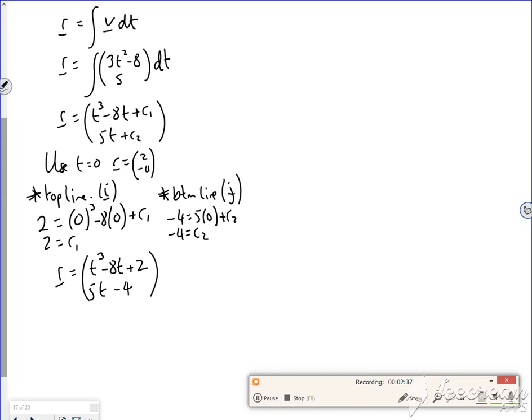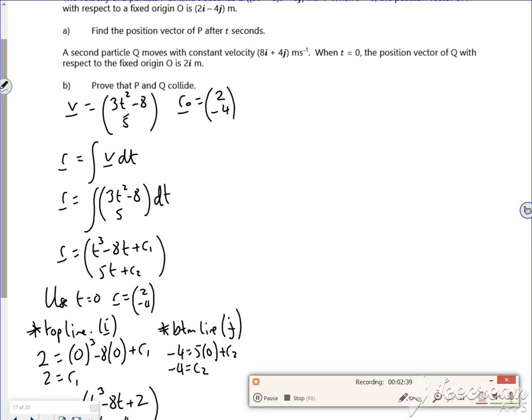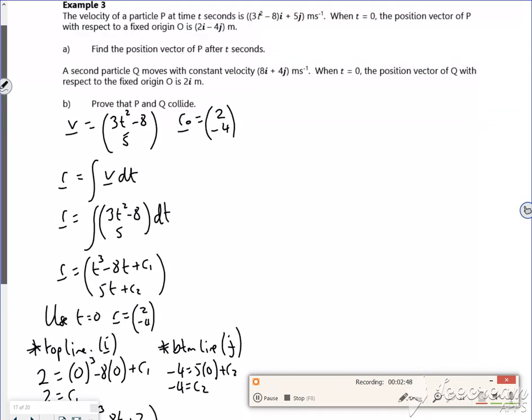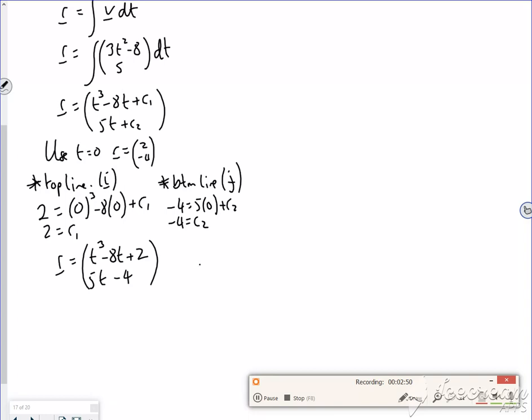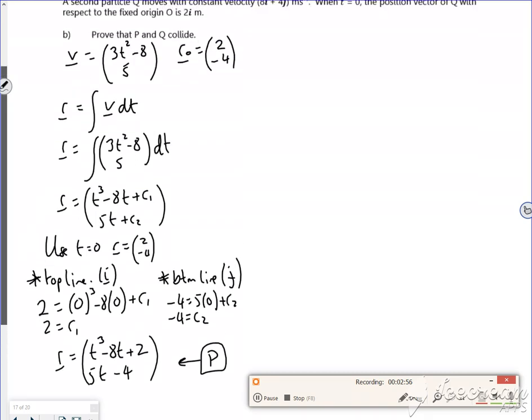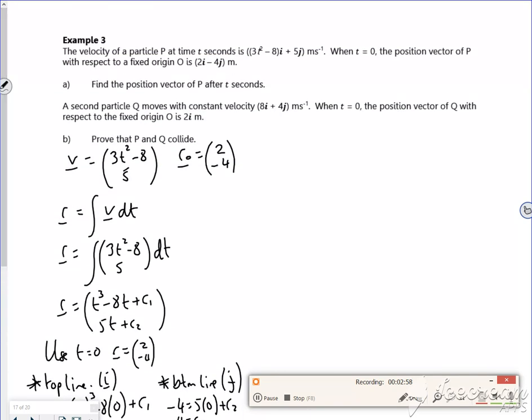So part b then, part b says, prove that P and Q collide. Right. So I've got this for, this is for P, isn't it? So that's for P. If they collide, the x components, or the i components and the j components.